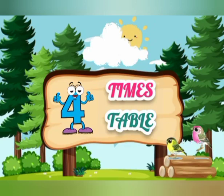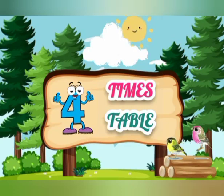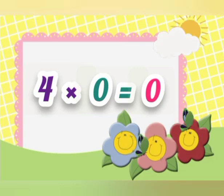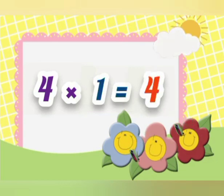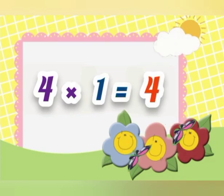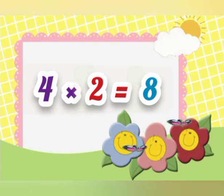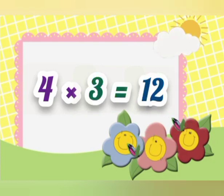4 times table. 0 times 4 is 0. 1 times 4 is 4. 2 times 4 is 8. 3 times 4 is 12.